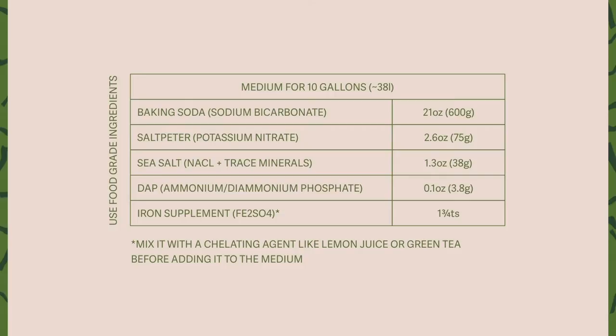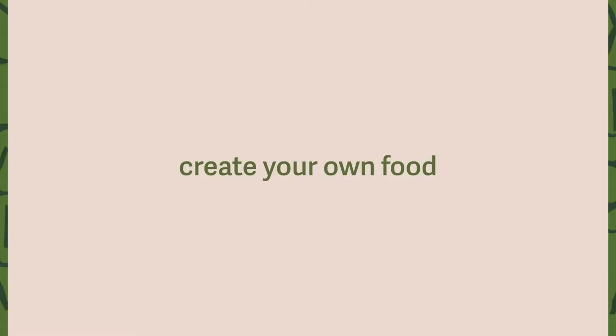Please always remember to use food grade ingredients. If you wouldn't eat it, don't give it to your spirulina. You will also need to prepare a food mix without baking soda to feed to your culture every time you take your spirulina out. This one you'll give your culture about half of the weight of wet spirulina you took out. So this food mix is composed of 93.3% of salt bitter, 3.3% of mono or diammonium phosphate, 2% of potassium sulfate, and 1.3% of epsom salt. You'll find these recipe cards in the course description.